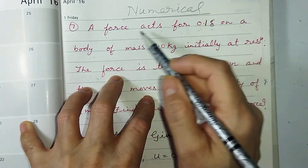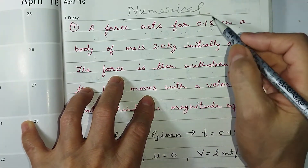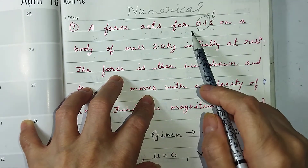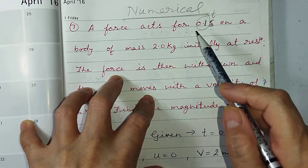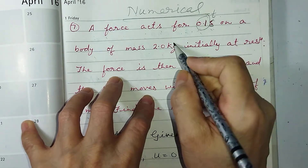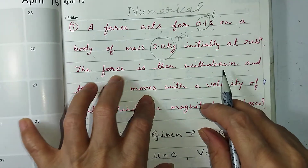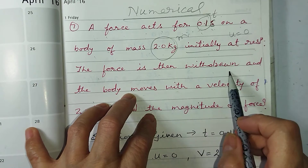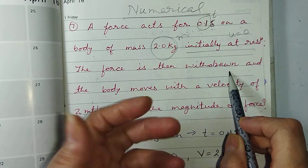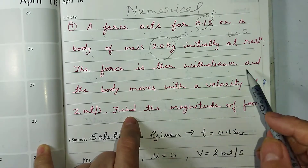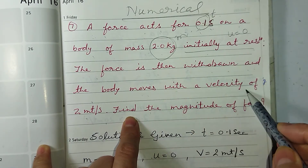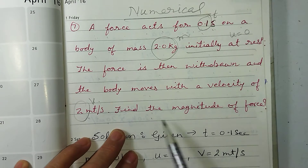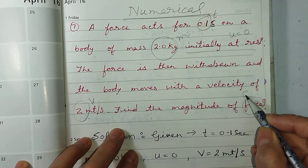Now, given: force acts for 0.1 second, so T is equal to 0.1 second. Mass is 2 kg, so M is equal to 2 kg. Initially at rest, so U is equal to 0. The force is then withdrawn, meaning the force is removed, and the body moves with a velocity of 2 meter per second, so V is equal to 2 meter per second. Find the magnitude of force, F is equal to question mark.